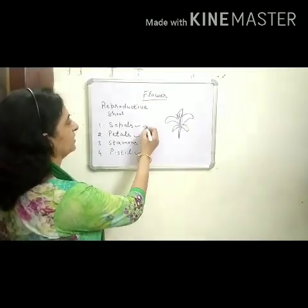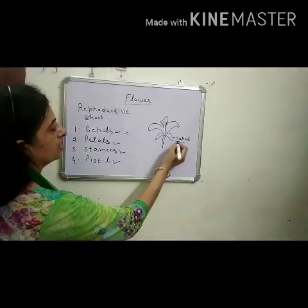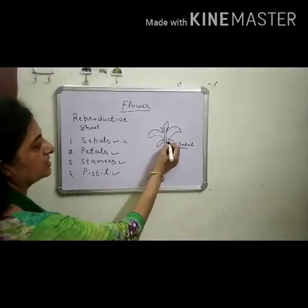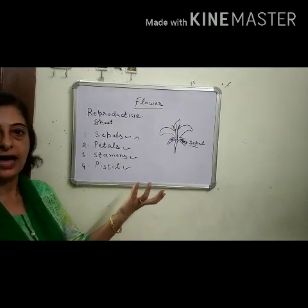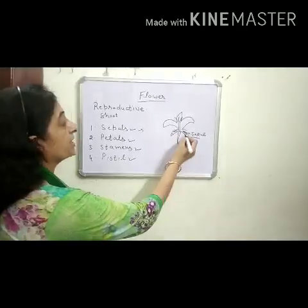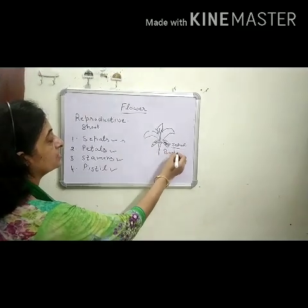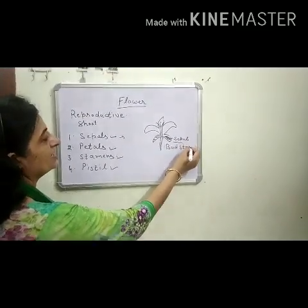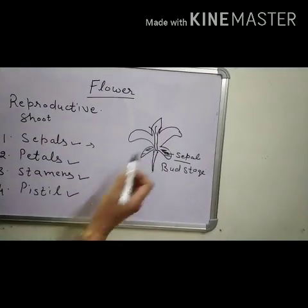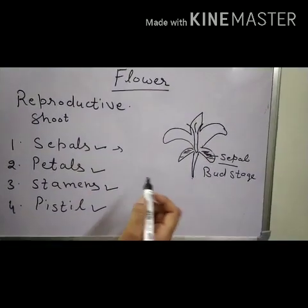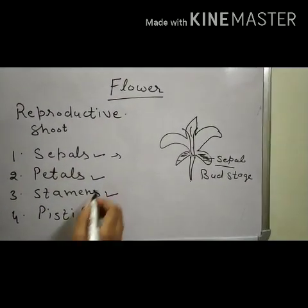First of all, sepals. Sepals are the green leaves at the base of the flower and they protect the flower in its bud stage.